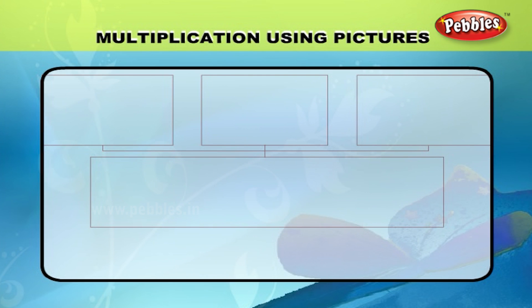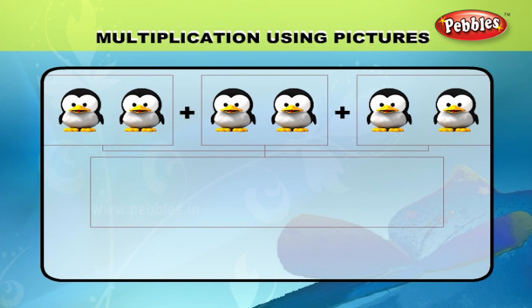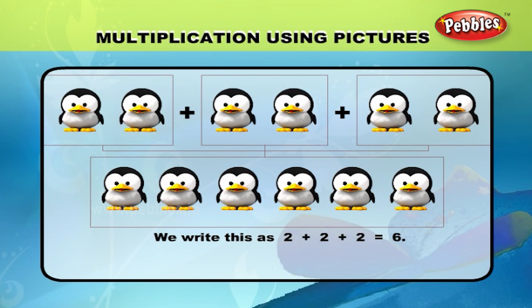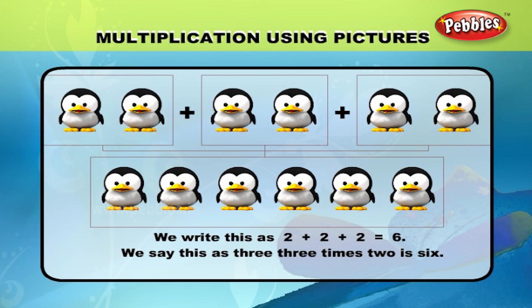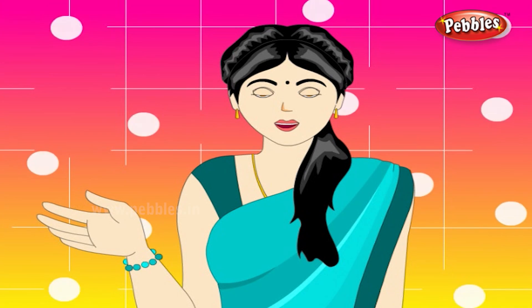Let us count these birds: 1, 2 plus 1, 2 plus 1, 2 is equal to 6. We can write this as 2 plus 2 plus 2 is equal to 6. We say this as 3 times 2 is 6. We can write this as 3 into 2 is equal to 6.